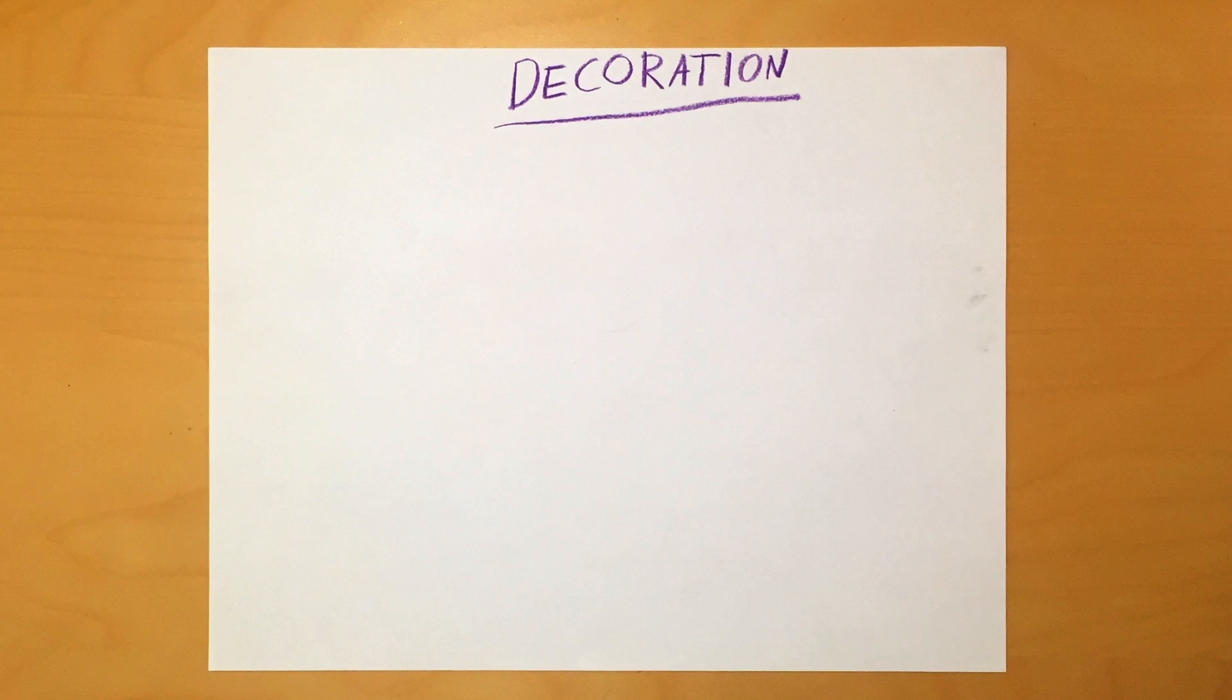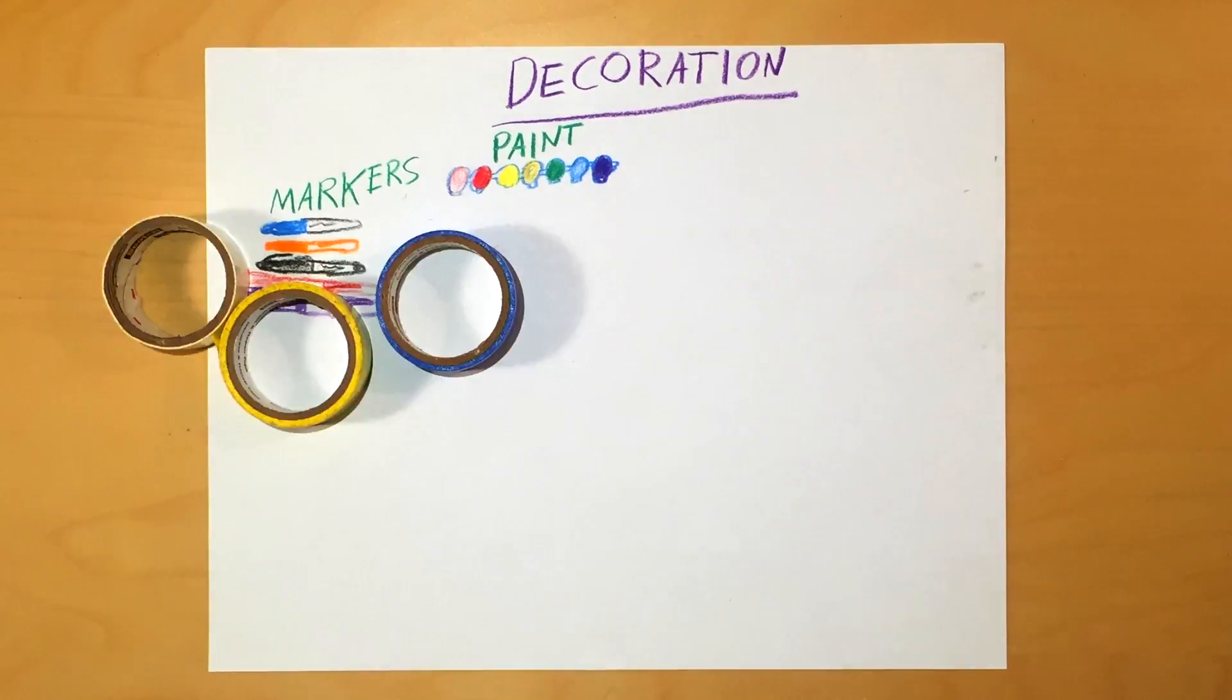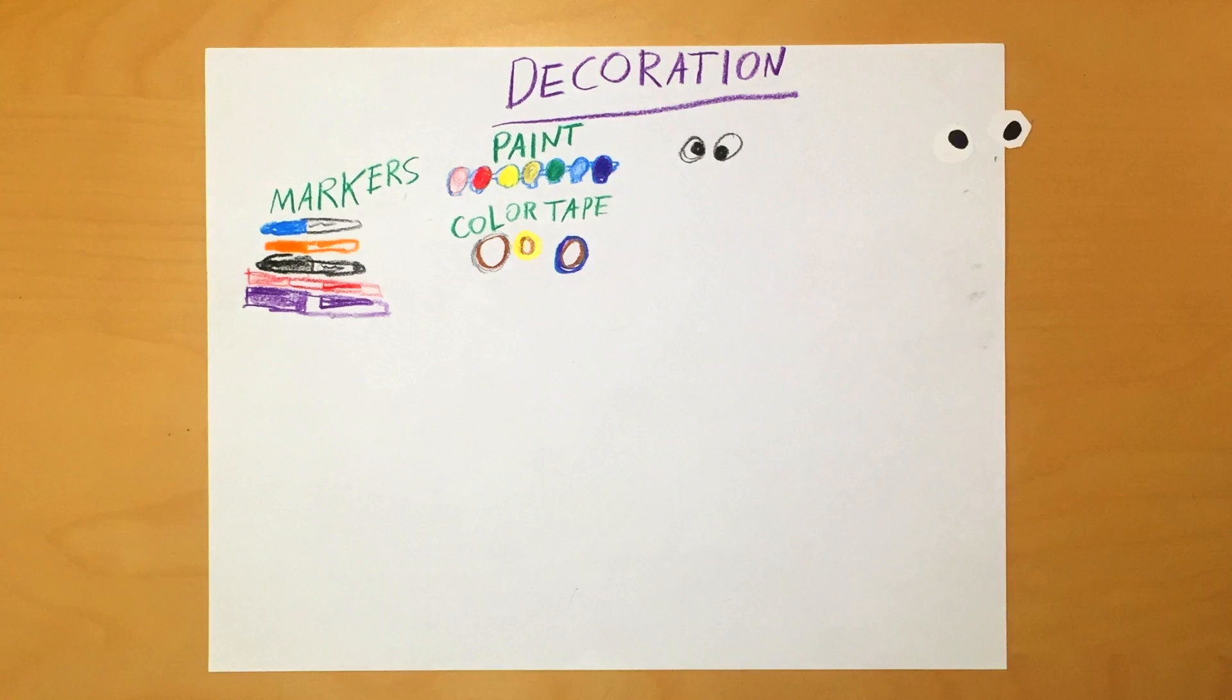Now let's get some materials that we can use to decorate the robot. I'd recommend getting supplies such as assorted markers, paint, colored tape, googly eyes, and pom-poms.